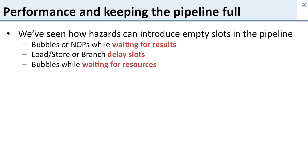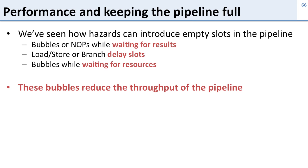If we only have one instruction memory and we have to wait to use it, these bubbles reduce the throughput of the pipeline because they're not doing useful work. These are wasted cycles, and that's why we draw them as little bubbles instead of useful work.